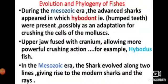In hybodont fish, the upper jaw was fused with the cranium, which gave it a more powerful crushing action — they could crush molluscan shells. This hybodont fish is now extinct.